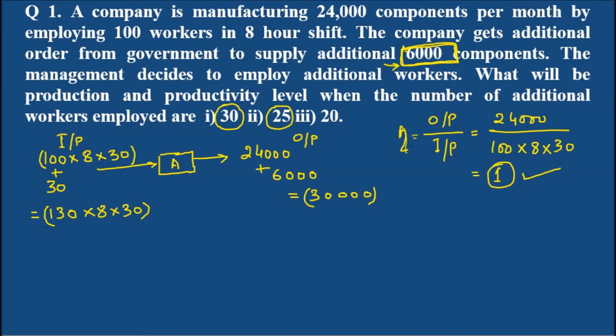In the second case, the output remains same, that is 30,000. But the input will be 125 workers multiplied by 8 and 30. And in the third case, the number of workers increased is by 20. Now 20 additional workers are increased. So we make it 120 multiplied by 8 and multiplied by 30. Input keeps on changing whereas output remains 30,000.